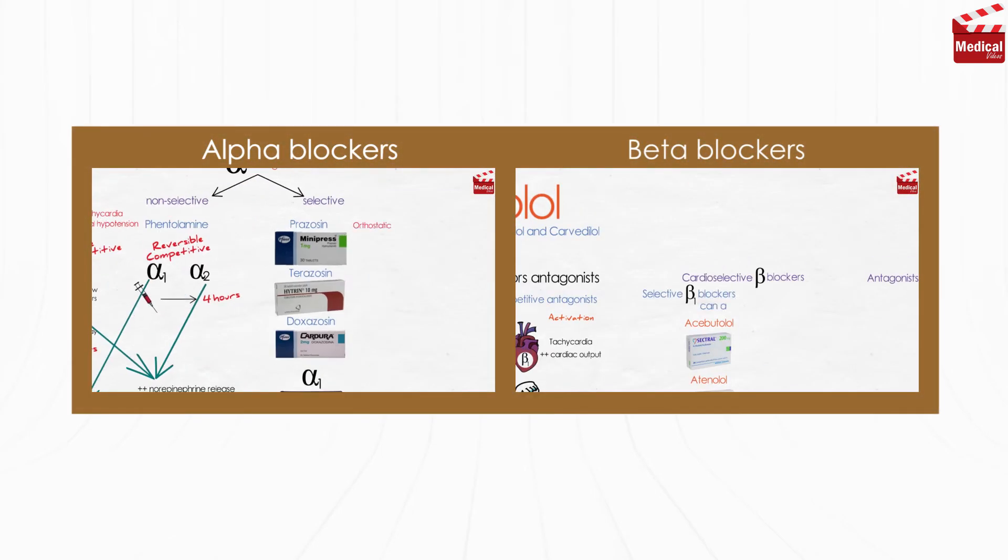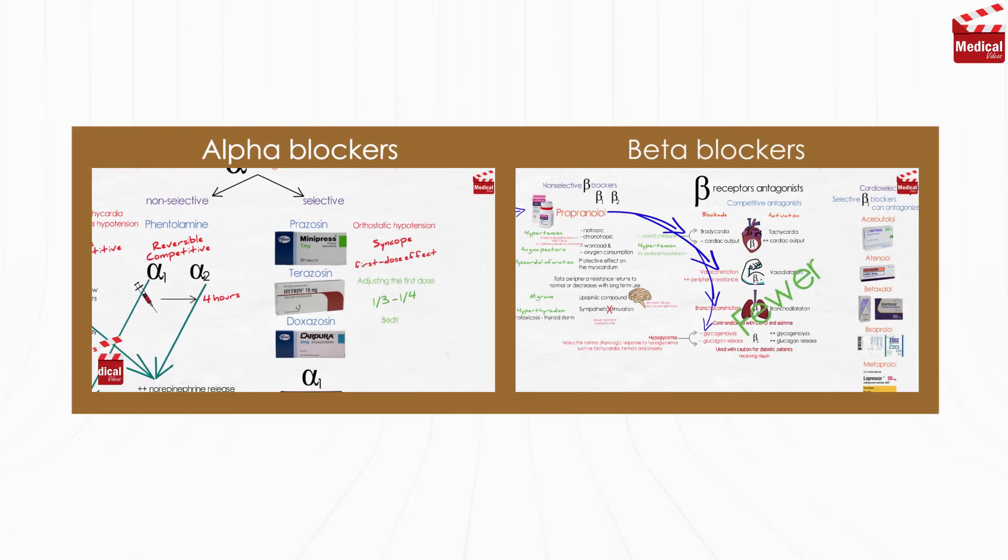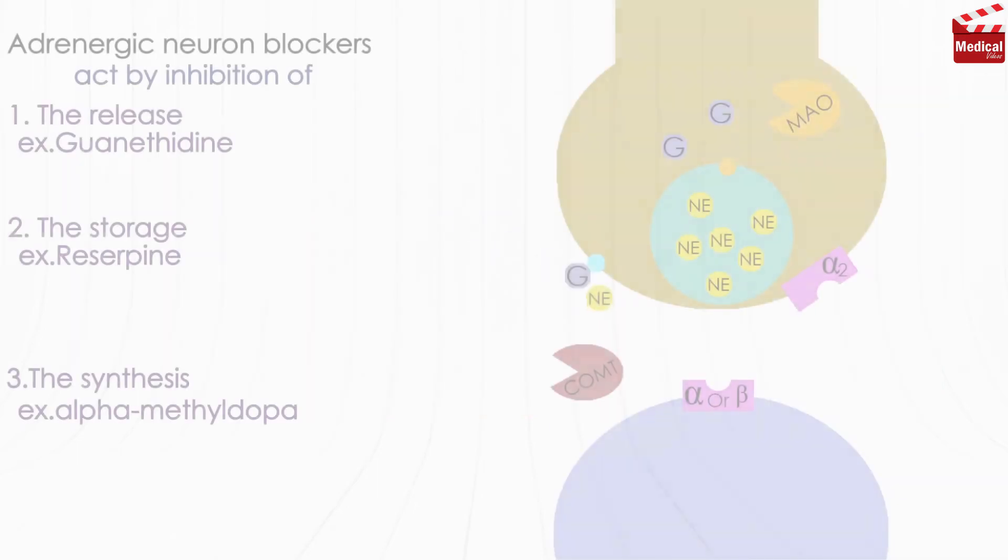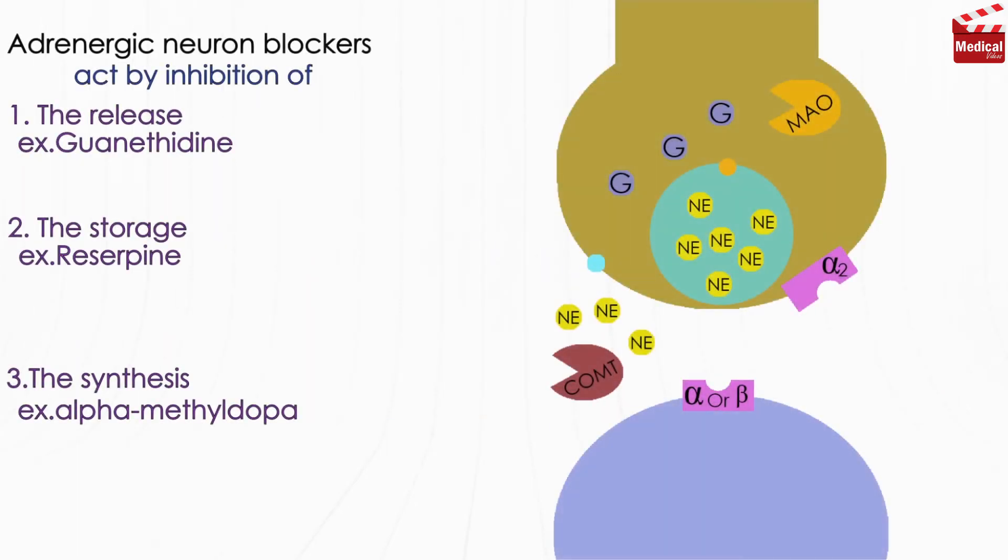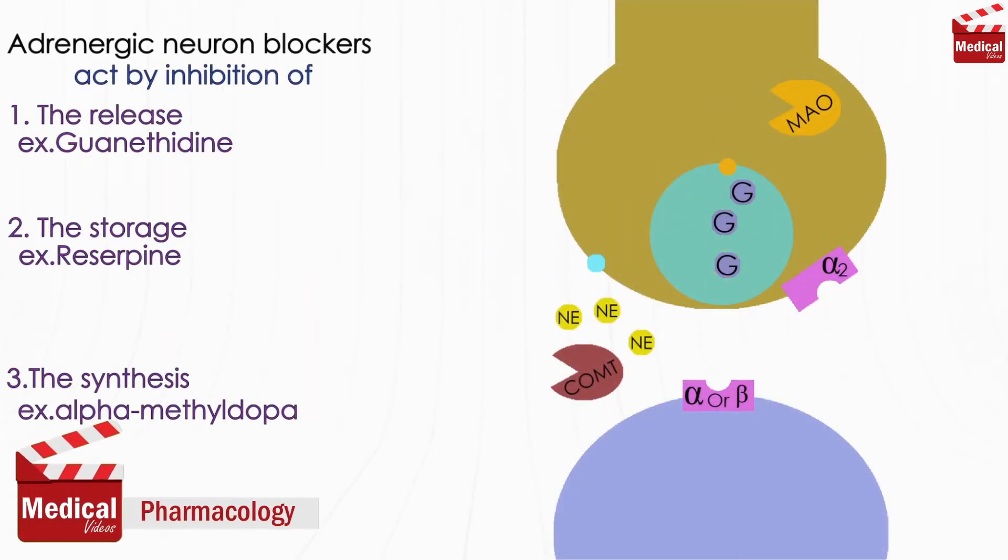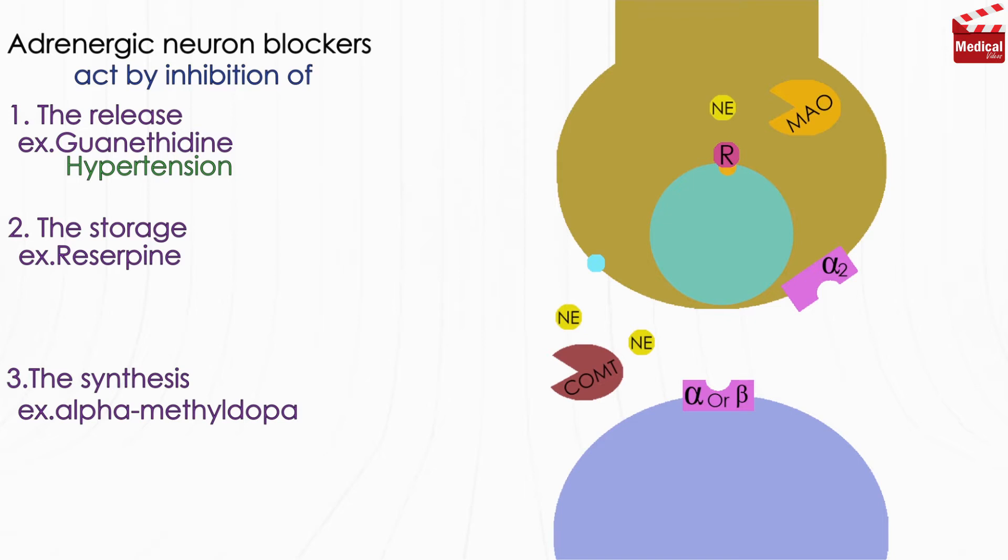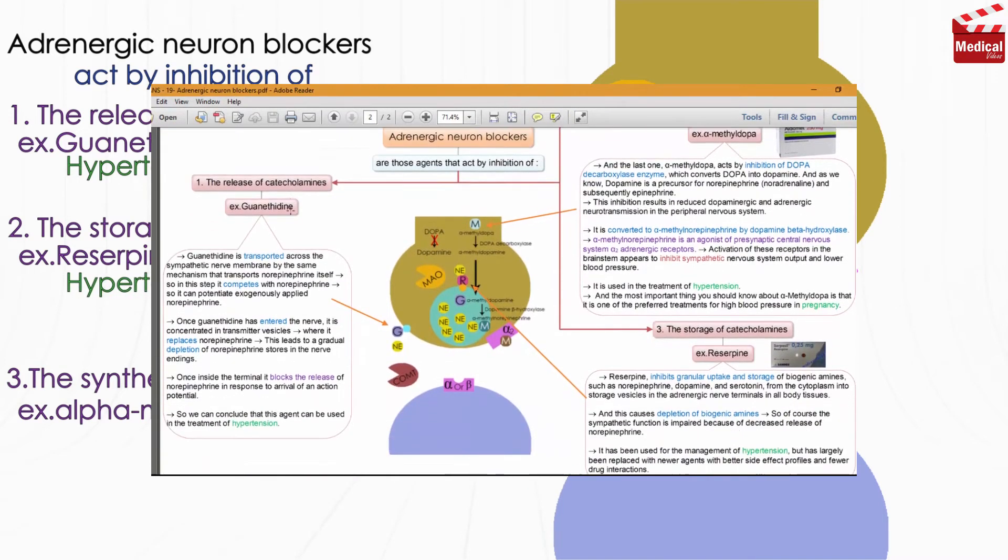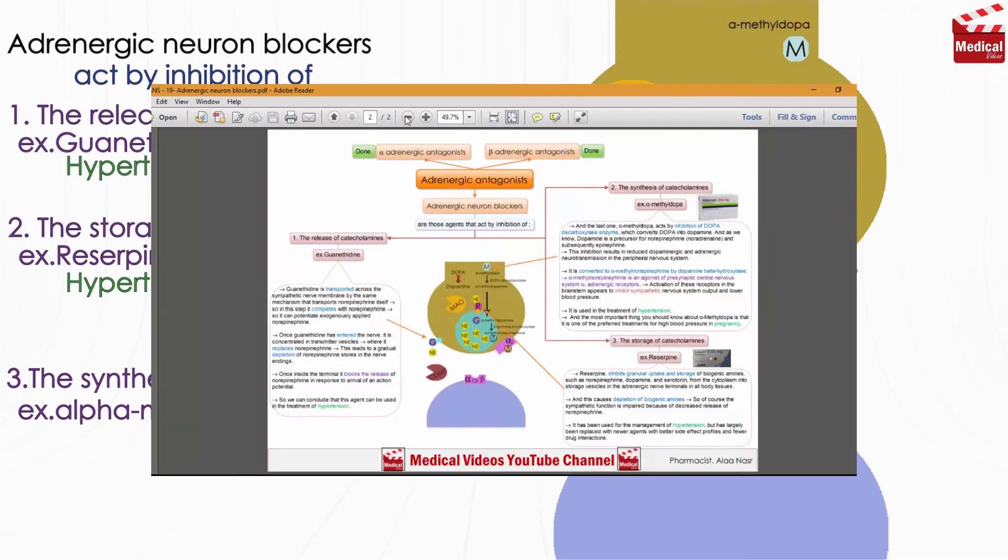In the previous lectures we discussed the alpha and beta receptor antagonists. This lecture will be the last one in this part, and it'll be about the adrenergic neuron blockers. What are they, and their mechanism of action and therapeutic uses? That's what we're going to talk about in the next three minutes. And you'll find the PDF of this lecture down in the description. Let's start.